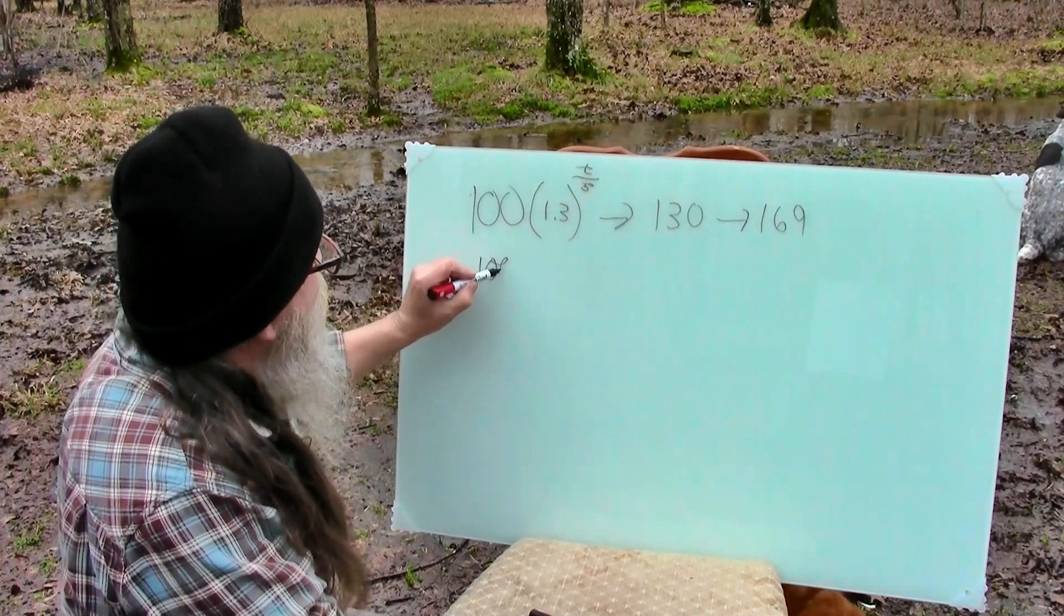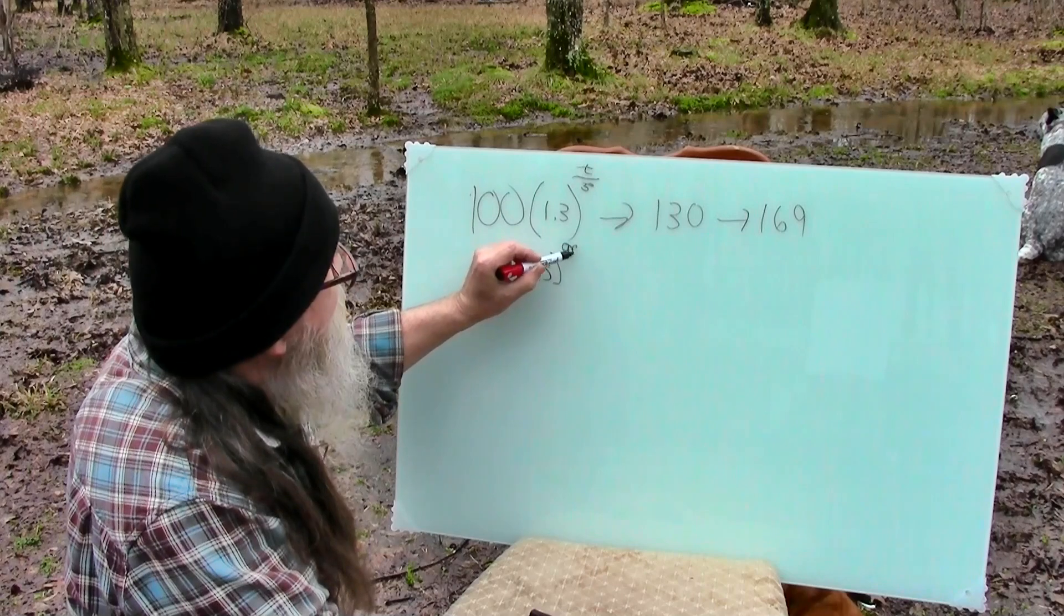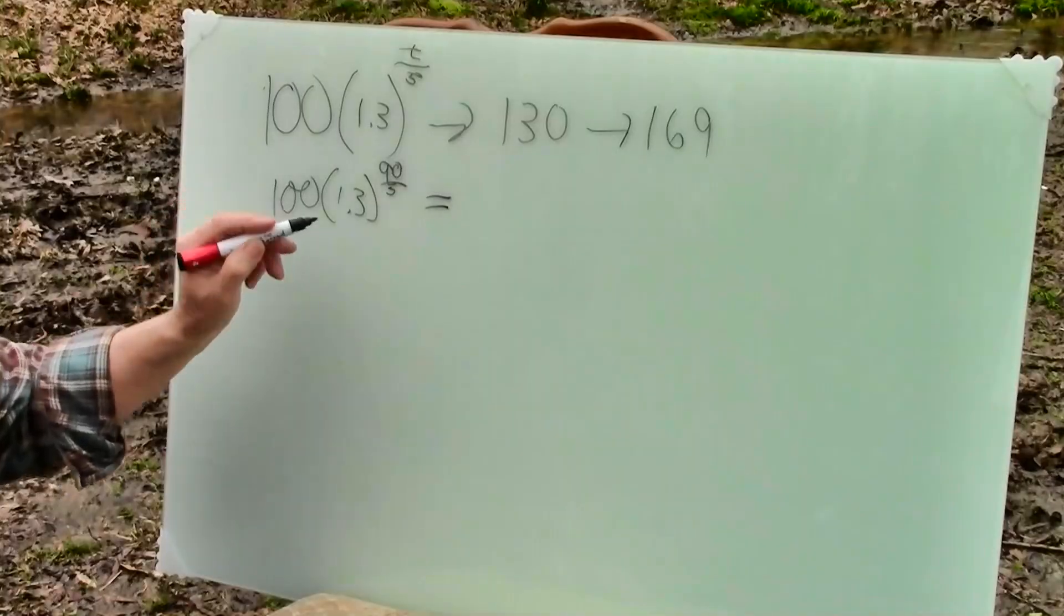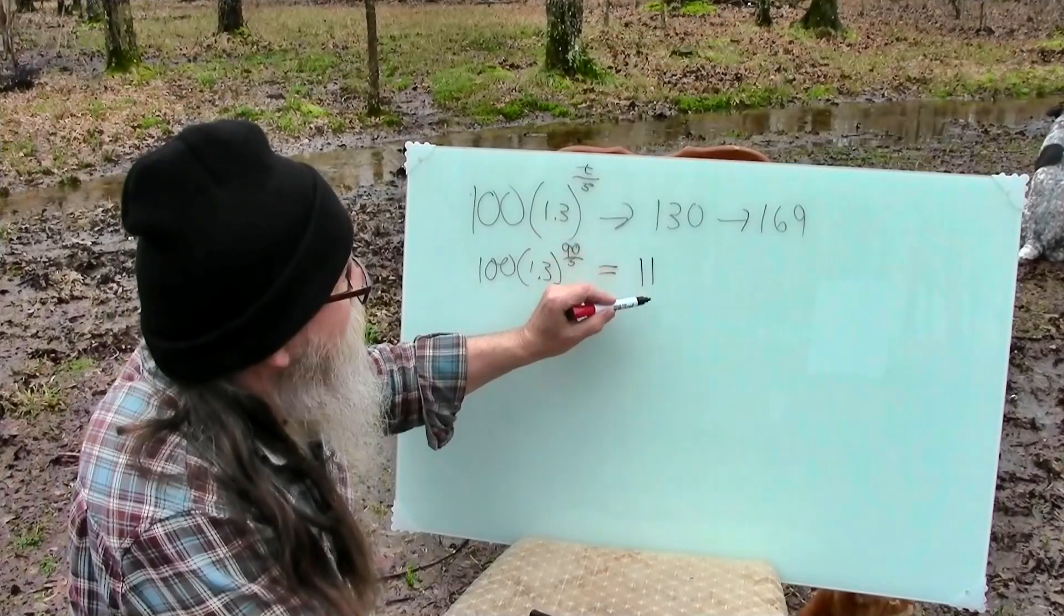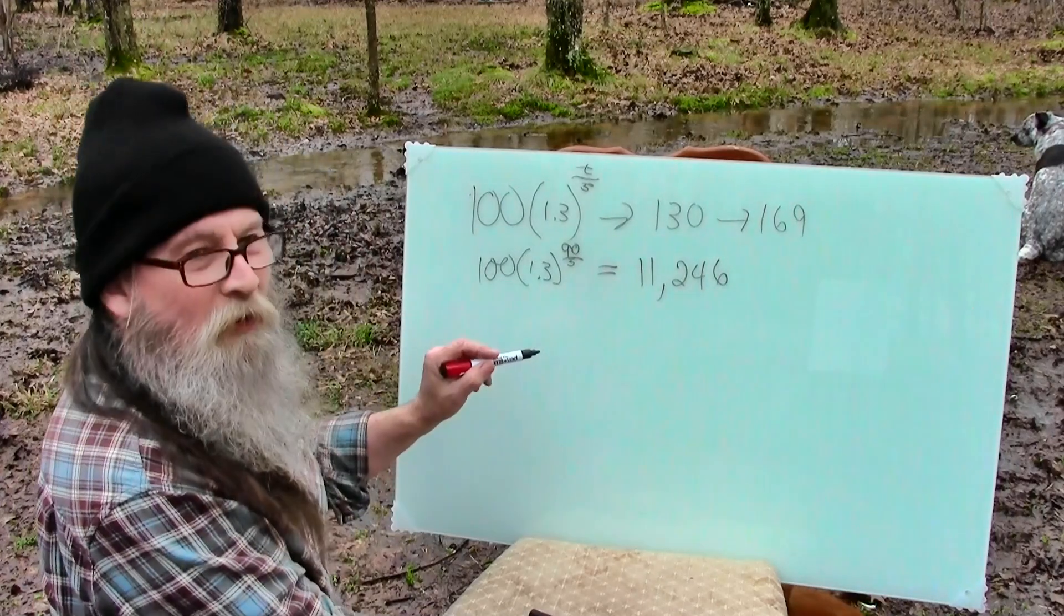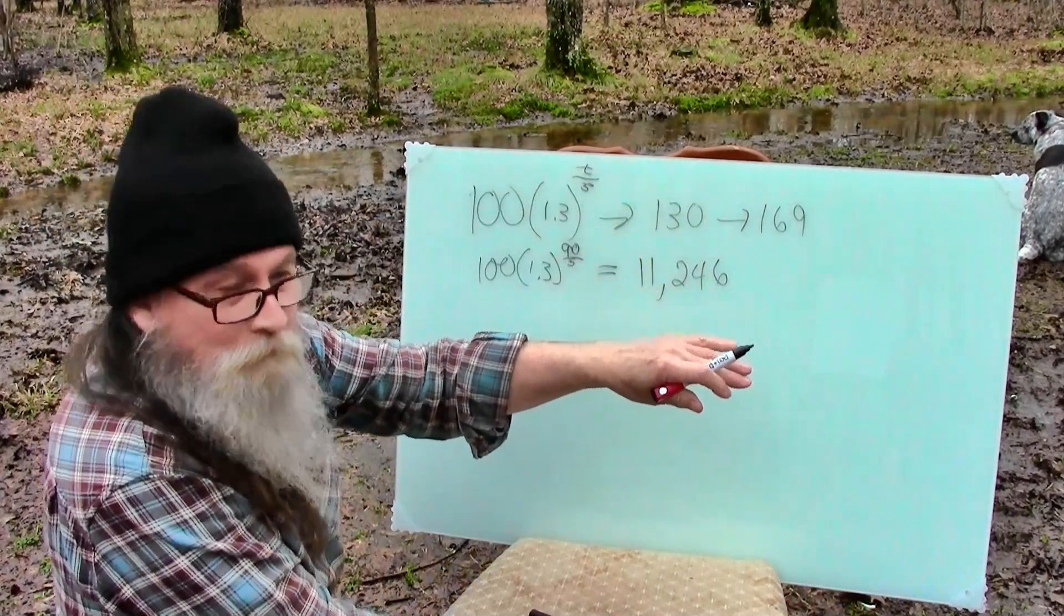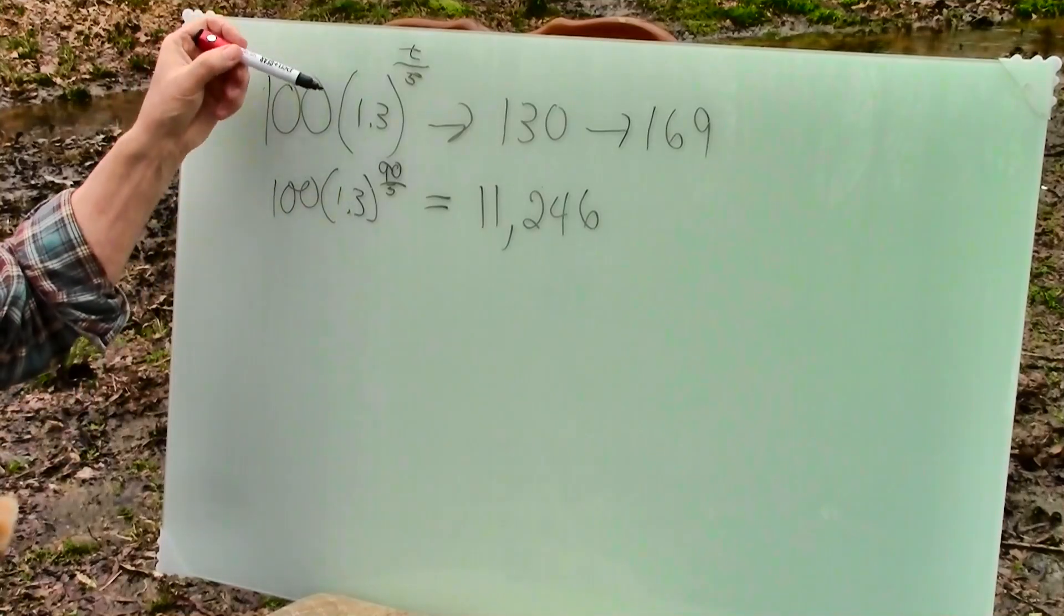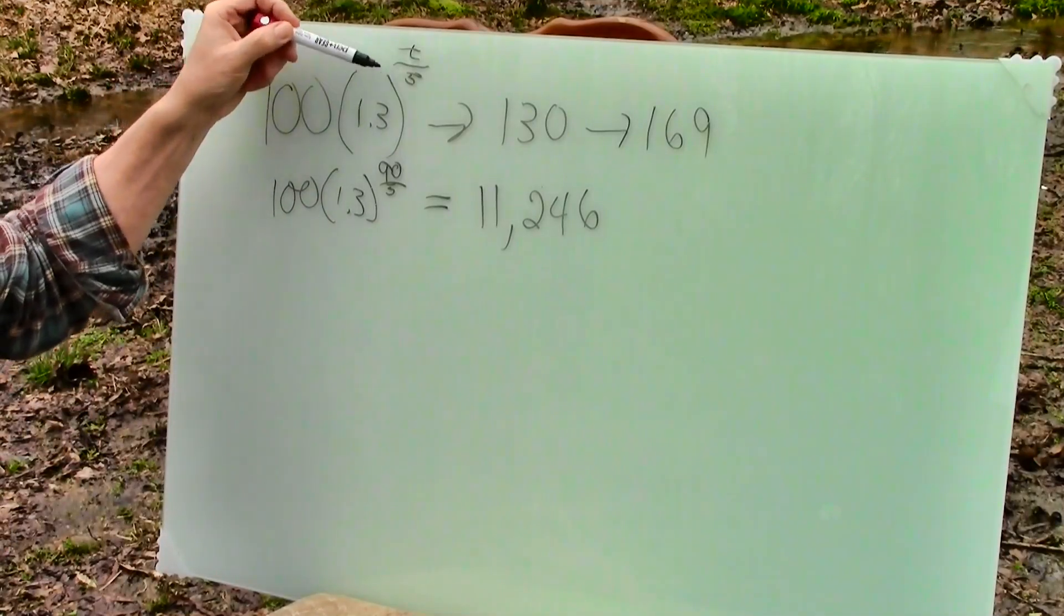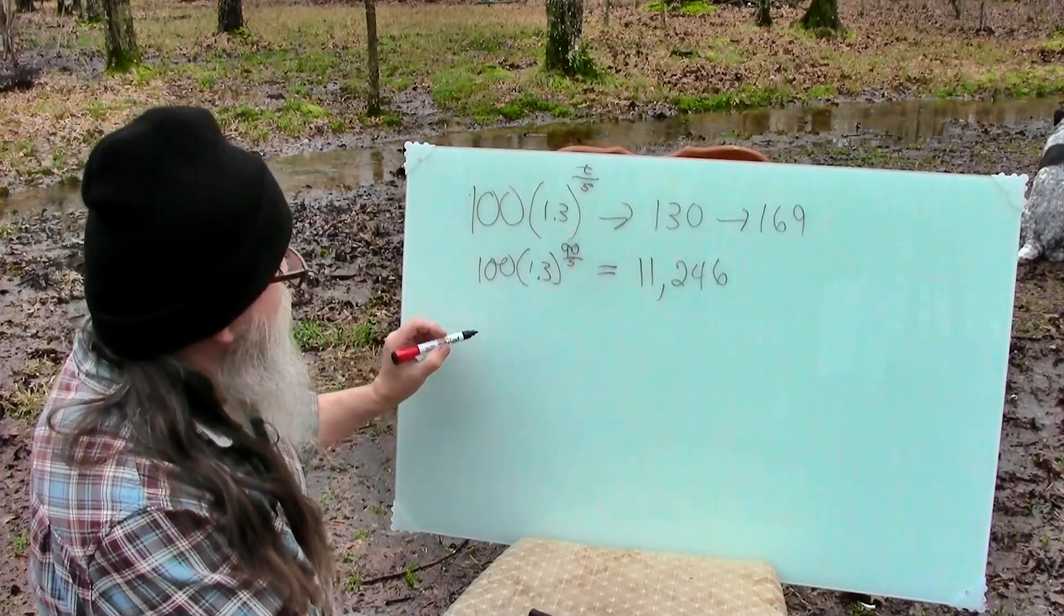So we got our 100, 1.3, 90 days in five day intervals. So this number here is 11,246 people. Now that's how many people are getting infected 90 days out. And again, our two variables here are how many people each person infects and what that incubation time period is.